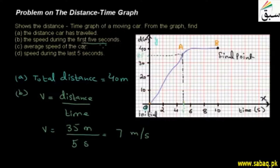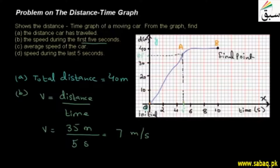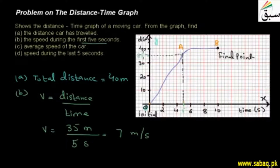So for the first 5 seconds, the distance was found to be from 0 to 35 meters, and the time was 5 seconds, giving us the speed for that interval.